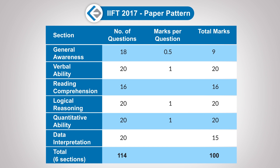Verbal Ability, Logical Reasoning, and Quant each had 20 questions worth 1 mark each. Reading Comprehension had 16 questions at 1 mark each, while Data Interpretation had 20 questions at 0.75 marks each, making up 15 marks. Total: 100 marks and 114 questions to be solved in 2 hours. IIFT 2018 may not follow the same pattern as 2017, so one must analyze four to five papers to understand the marking system and get acquainted with IIFT's paper style.